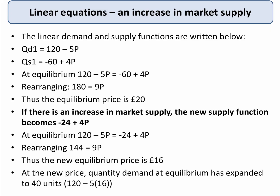Let's think about an increase in market supply — an outward shift of market supply. Going back to the original equations: Qd1 equals 120 minus 5p, and Qs1 equals minus 60 plus 4p. Putting the two together to find equilibrium, we find that price equals 20. Now halfway down the slide there's been an increase in market supply. Can you visualise that? That's an outward shift of the market supply curve — think about what that does to the price and the quantity.